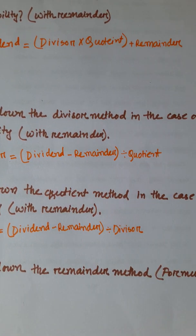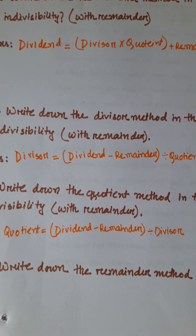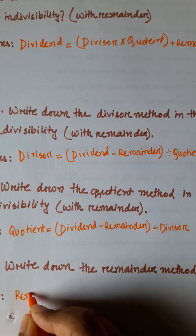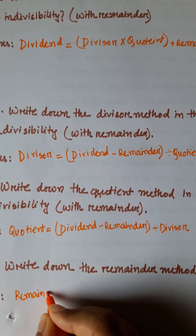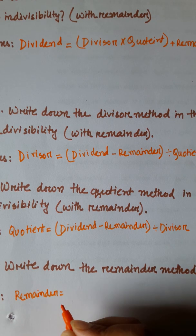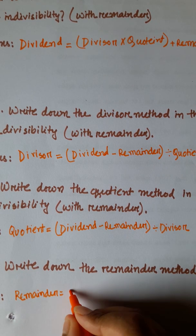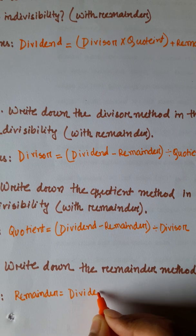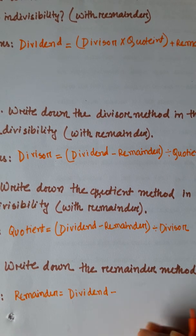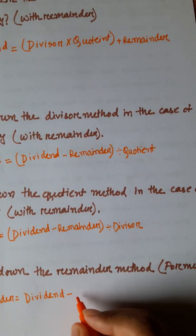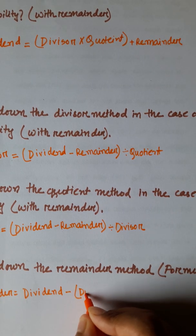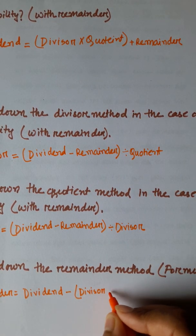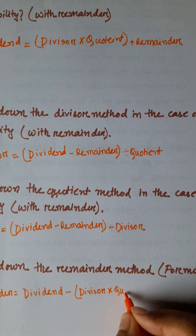Number 25 - Remainder: remainder is equal to dividend minus divisor into quotient.